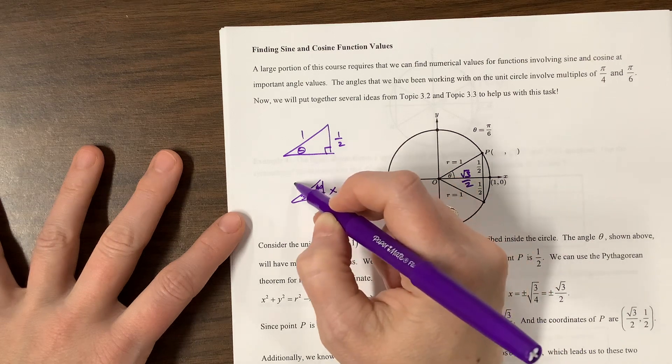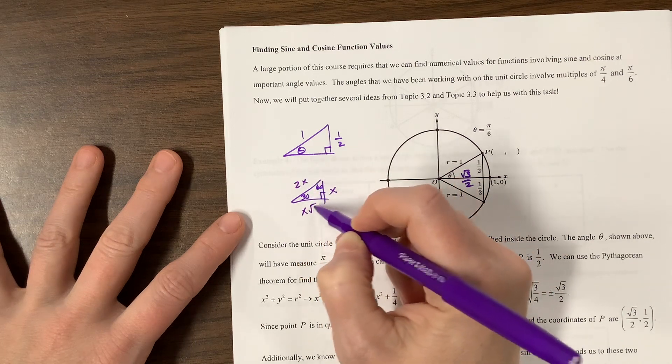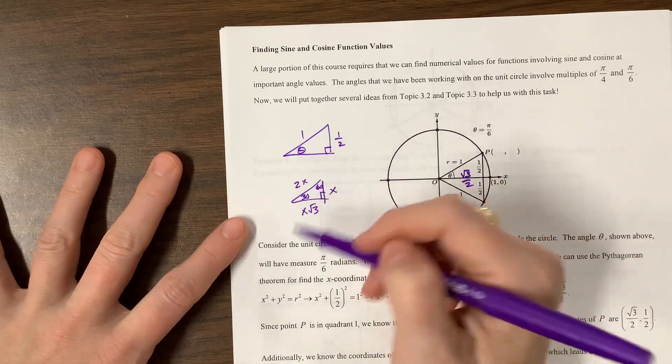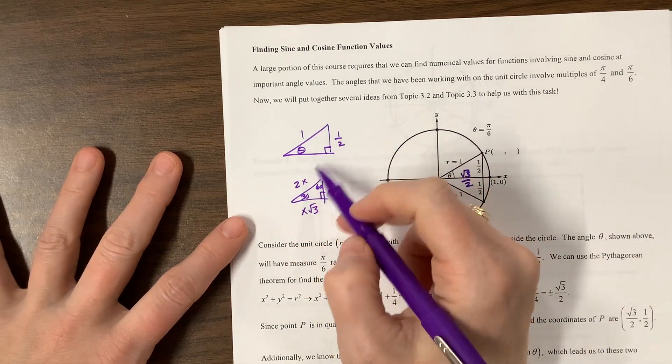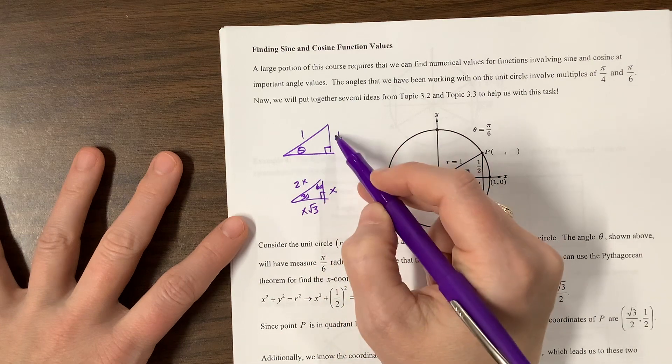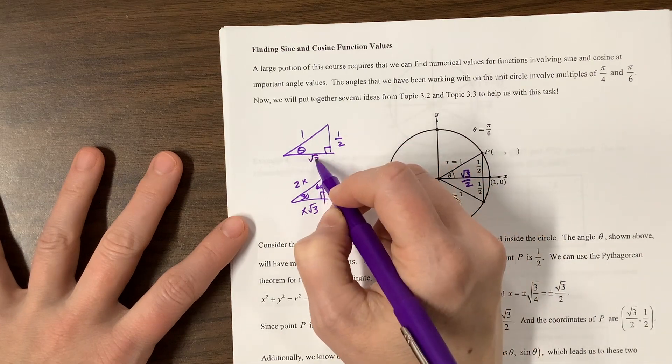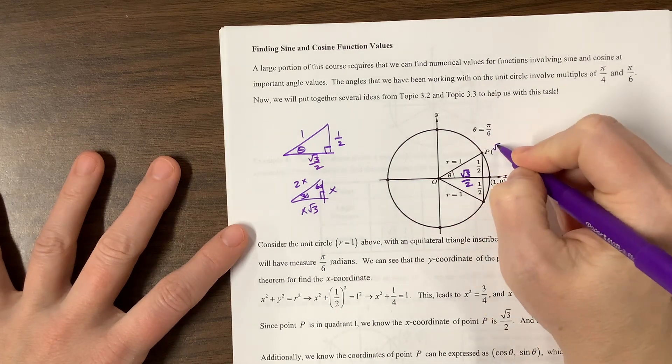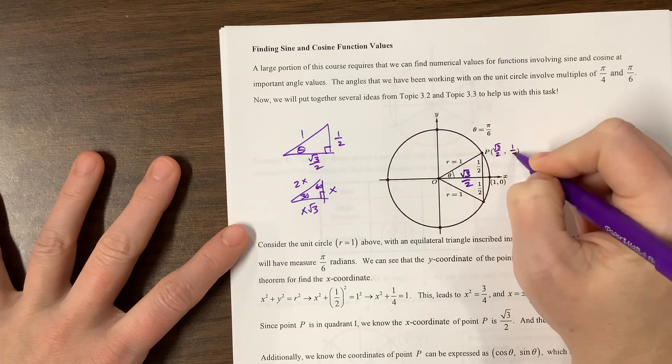You could say x, 2x, and then this is x root 3, or we would say 1, 2, root 3, however you want to set that up. So this length right here is going to be this number times root 3, so I would call this root 3 over 2. And so the coordinates to this point P are root 3 over 2 comma positive 1 half.